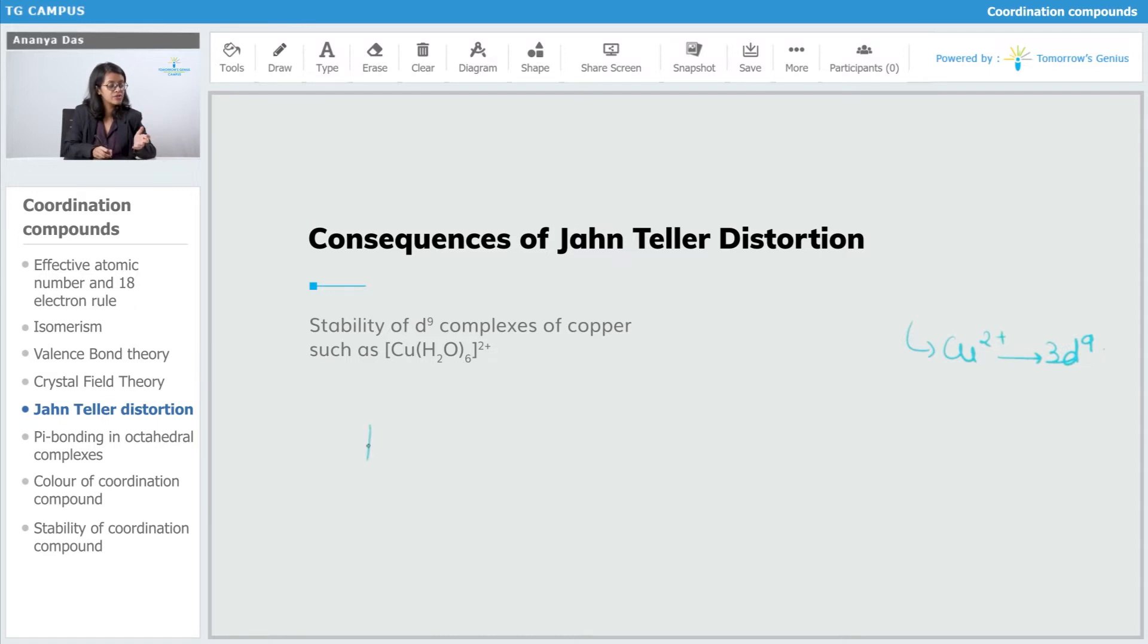First of all we have the unsplit configuration but raised in energy. This will split to give you Eg and T2g, and this will further split to give you Jahn-Teller distortion configuration.